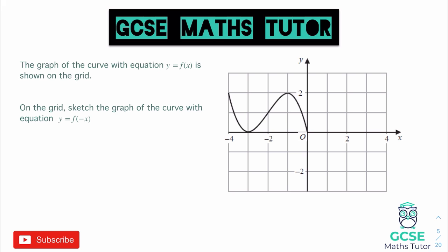Looking at this question, it says the graph of the curve with equation y equals f of x is shown on the grid. On the grid, sketch the graph of the curve with equation y equals f of negative x. In order to tackle this, you need to know some of the rules for what's happening either inside or outside the bracket.